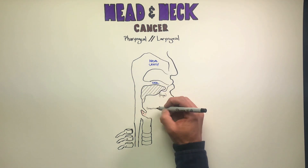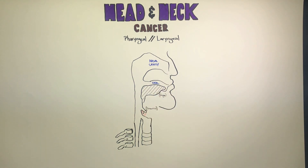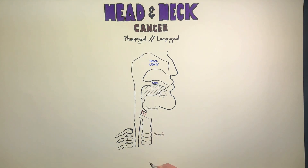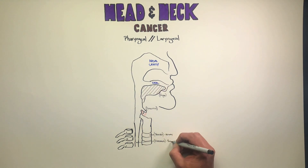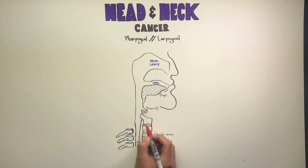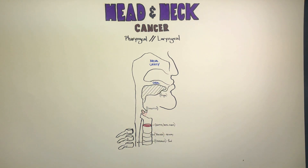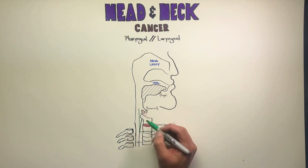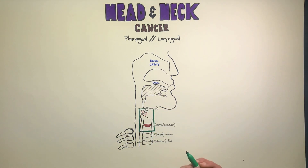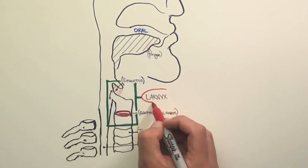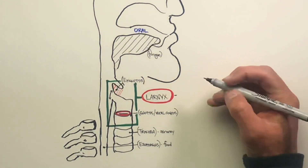Today's video will be focusing on head and neck carcinomas, both pharyngeal and laryngeal. I'm getting down some of our anatomical landmarks right now. You'll see that this is a head facing to the right — the nasal cavity, oral cavity, and then in the throat we have the esophagus, trachea, and glottis, which is the vocal cords as well. The box I'm illustrating here is the larynx, and so this will be a focus of much of the talk today.